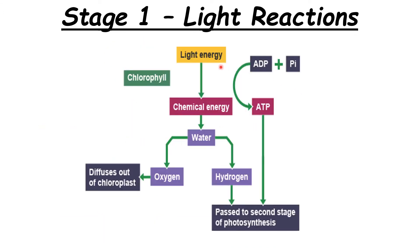To summarise Stage 1: light energy is converted into chemical energy — ADP and phosphate combine to make ATP. Water is split into oxygen, which is a waste product and diffuses out, and hydrogen, which is important and goes on to Stage 2 along with the ATP.